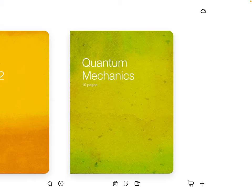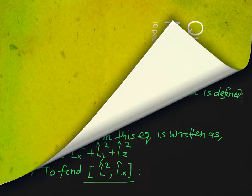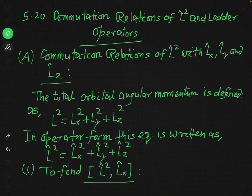Today we are going to discuss the commutation relations of the L-squared operator with the components Lx, Ly, and Lz. Simultaneously, we will also discuss the commutation relations of ladder operators, denoted by L-plus and L-minus. So let us start by dealing with the commutation relations of operator L-squared with its components.